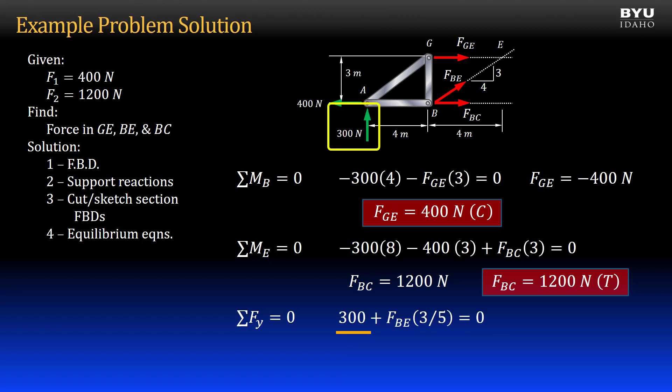We have the 300 newton reaction force, plus the vertical component of force BE, equal to zero. Force BE is negative 500 newtons, or 500 newtons in compression. And we have all three member forces.